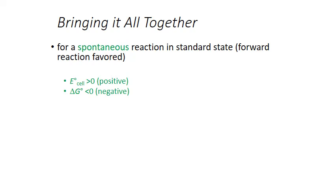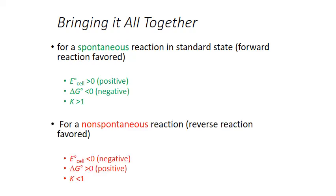From our study of equilibrium, we also know that reversible processes in which the forward reaction is favored — which happens when the forward reaction is spontaneous — will have an equilibrium constant K greater than one. This is because the reaction proceeds until there are more products at equilibrium than reactants. Non-spontaneous redox reactions will have a negative electrochemical cell potential, a positive Gibbs free energy change, and a K value less than one, as there will be mostly reactants at equilibrium. K values less than one also imply that the reverse process is favored.